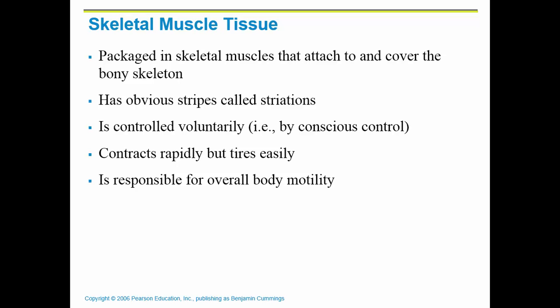We're going to be studying skeletal muscle the most in this section because we are going to be looking at the cat's skeletal muscles and comparing those to humans. Skeletal muscles are packaged in a certain way to create more efficiency. They are striated — we learned that in Chapter 4. They are controlled voluntarily, the only muscle type that is, and they contract rapidly but tire very easily. Skeletal muscle is responsible for our overall body movement.